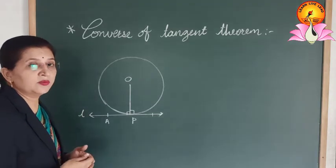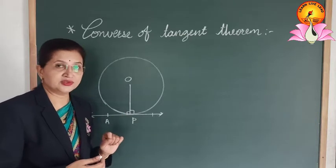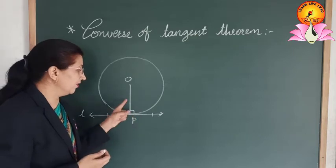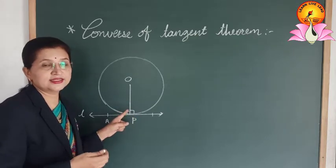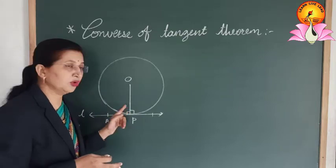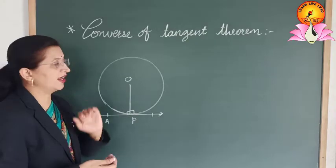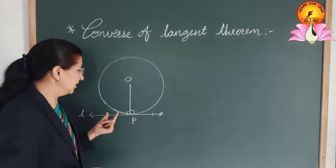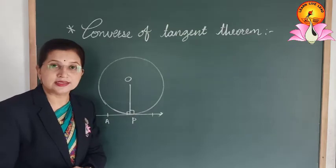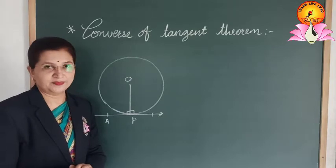So students, in some questions we may be asked to prove that a line is a tangent to the circle. In that case, we just need to show that at the point of contact there is an angle of 90 degrees. If we are able to show a 90-degree angle, then by the Converse of Tangent Theorem, we can say that the line is a tangent to the circle. This is the Converse of Tangent Theorem.